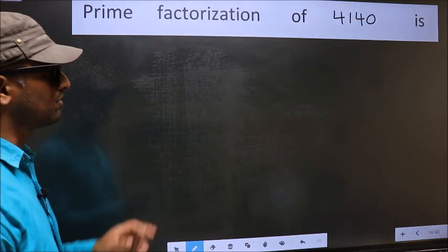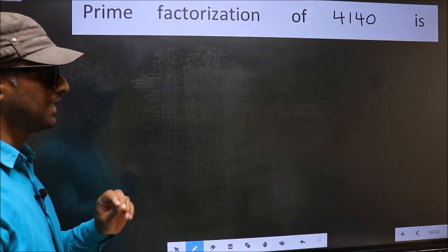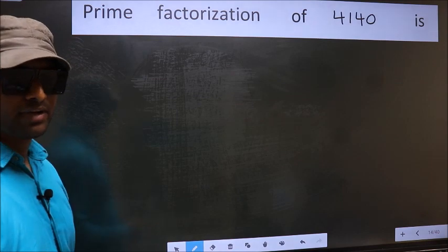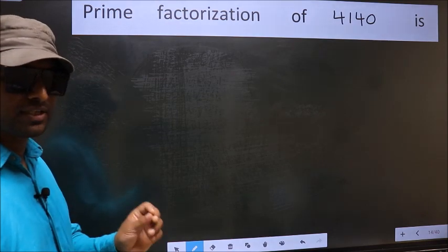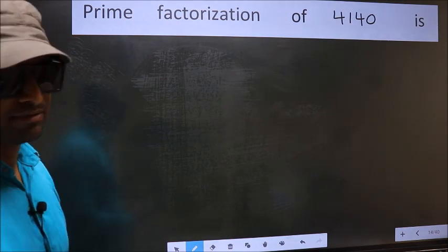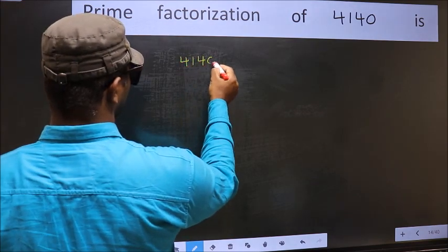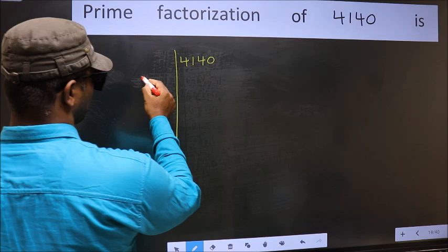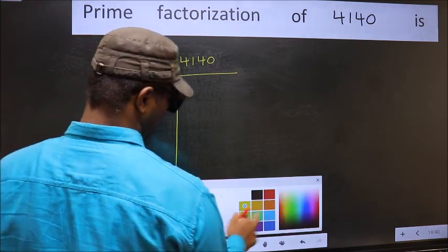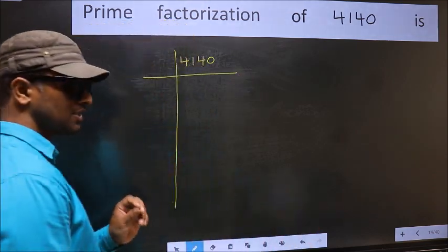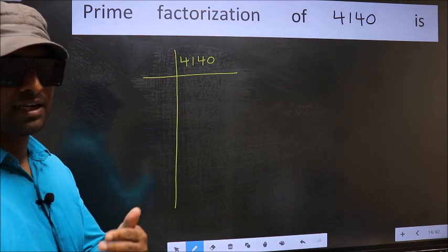Prime factorization of 4140. To do prime factorization, first we should frame it in this way. 4140. This is your step 1. Next.